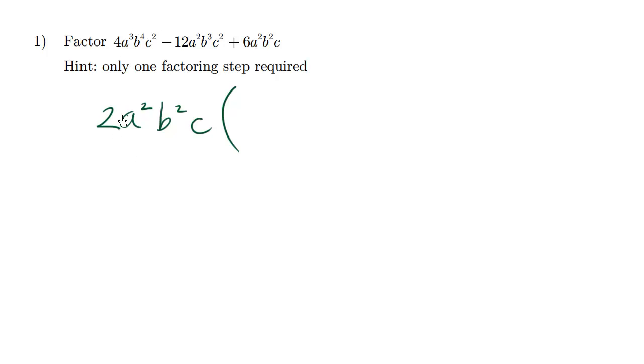Let's begin by looking at the number. 2 times what is 4? It's 2 times 2 is 4. A squared times what is A cubed? It's going to be A. B squared times what is B to the 4? It's going to be B squared. Because when we multiply with the same base, we simply add the exponents. 2 plus 2 is 4, resulting in B to the 4.